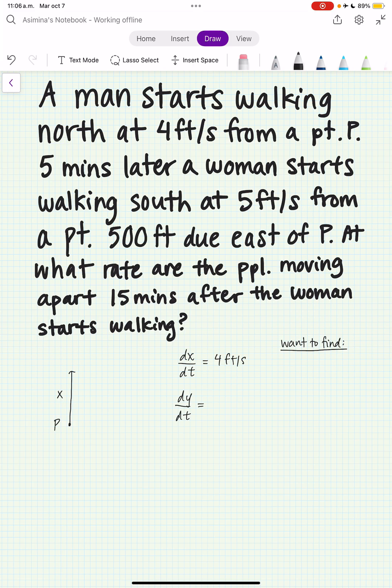Now five minutes later, a woman starts walking south at five feet per second from a point 500 feet due east of P. Let's say y is the distance walked by the woman, so we know she's walking at five feet per second. This is 500 feet.